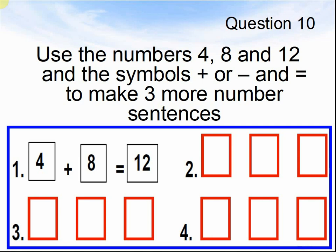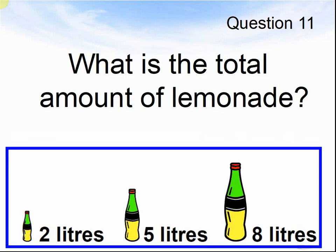Here comes question 11. What is the total amount of lemonade? 2 litres plus 5 litres plus 8 litres — what does that make? Pause the video until you are ready for the next question.